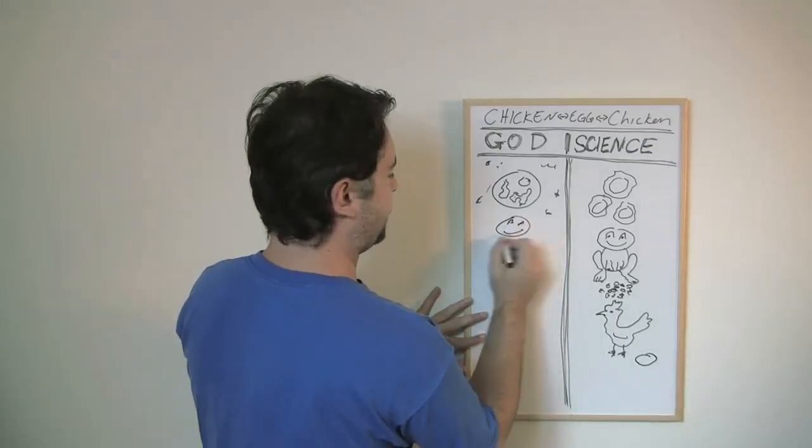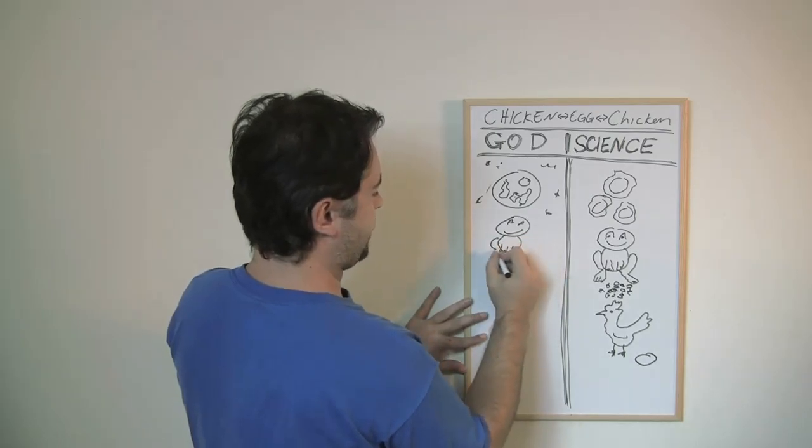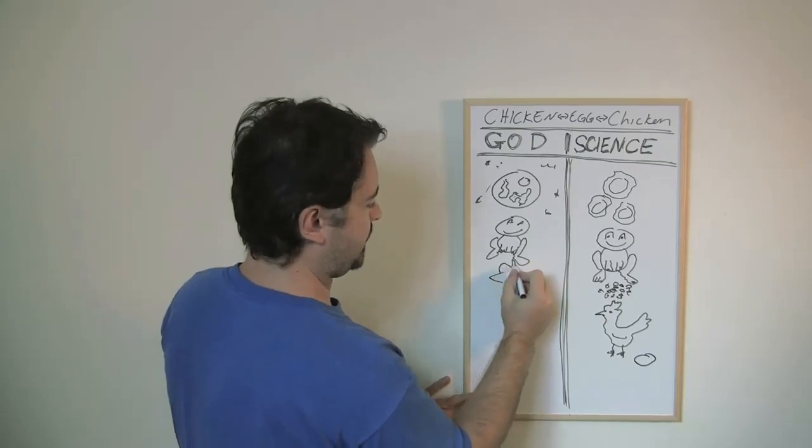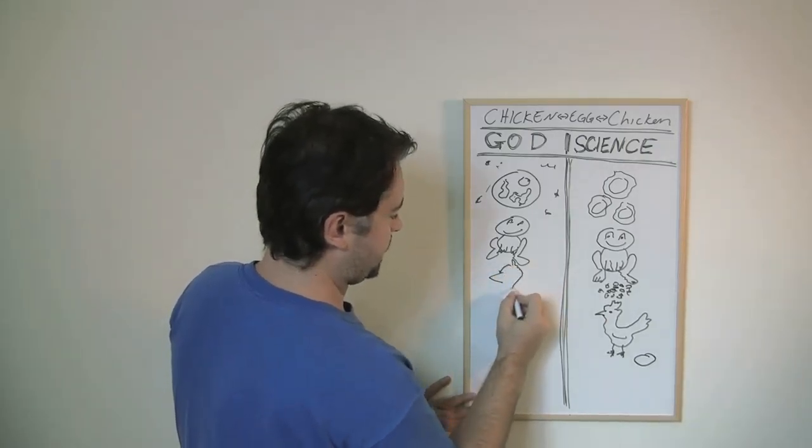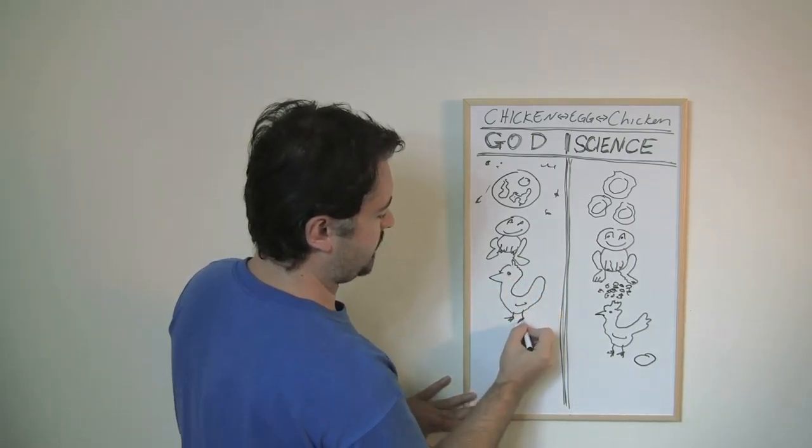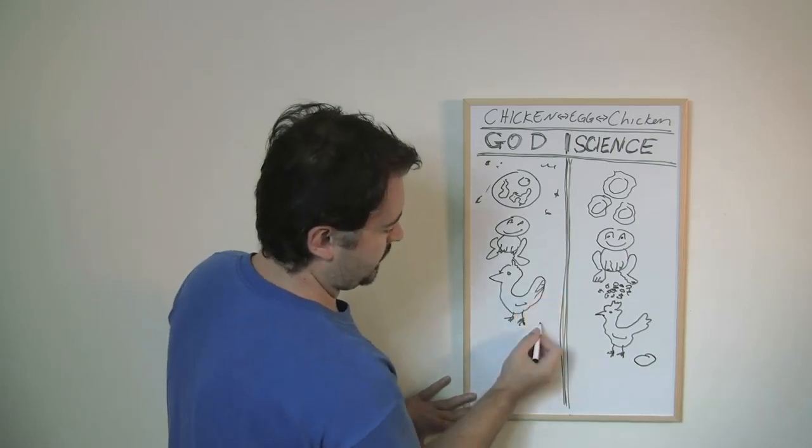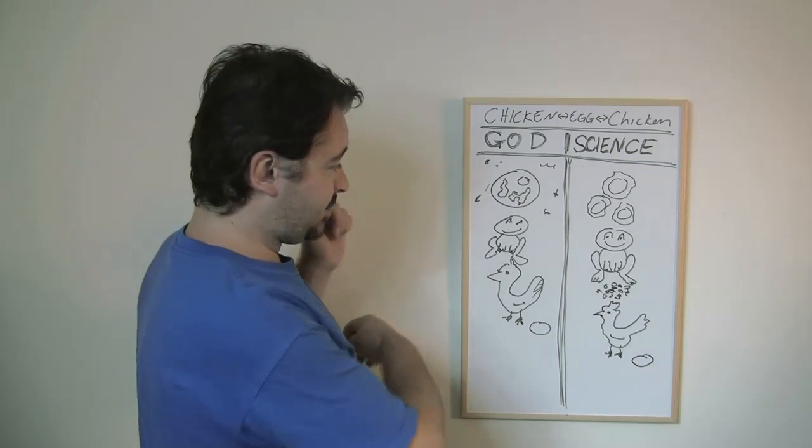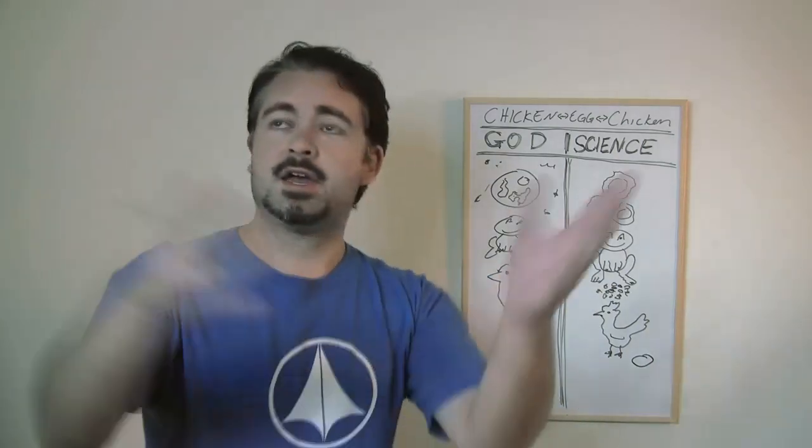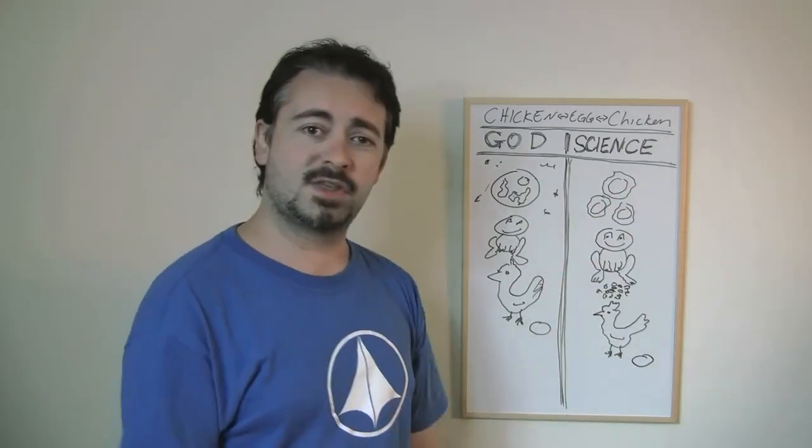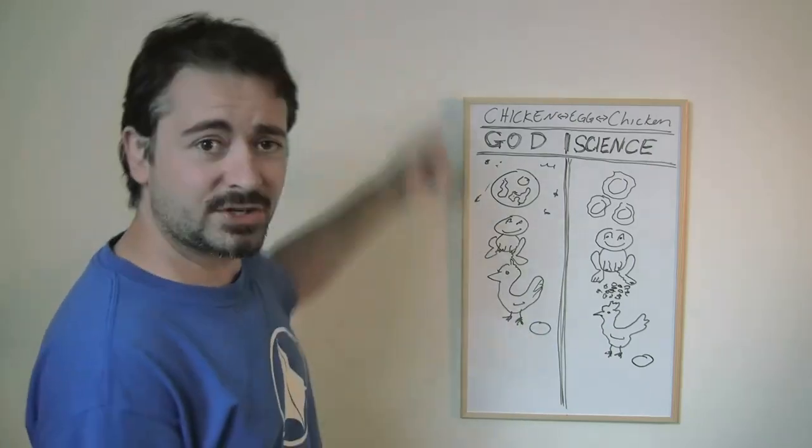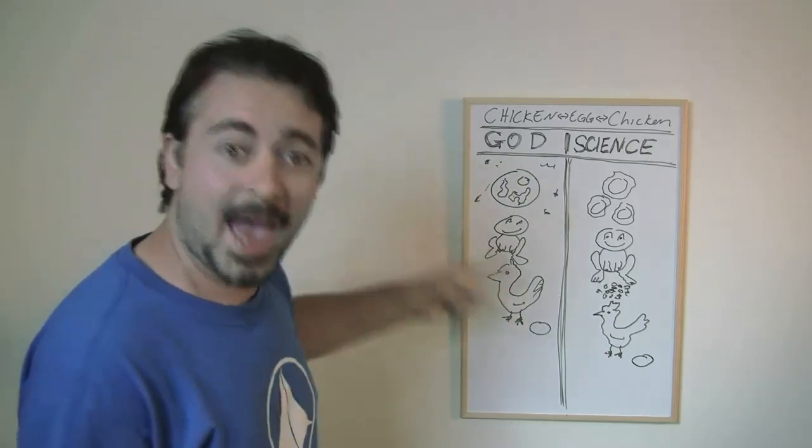So he created animals, including a happy little retard frog. And of course, at the same time, he created happy little chickens. And then the chickens laid eggs. And that makes sense because if God created all life on earth and just threw a bunch of chicken eggs on the ground so then chickens could hatch and then proliferate, there's no one to look after those little chicks. They would have been gobbled up by all the predators that God put here as well. So it makes sense here in God's creationist universe. The chicken had to come first.